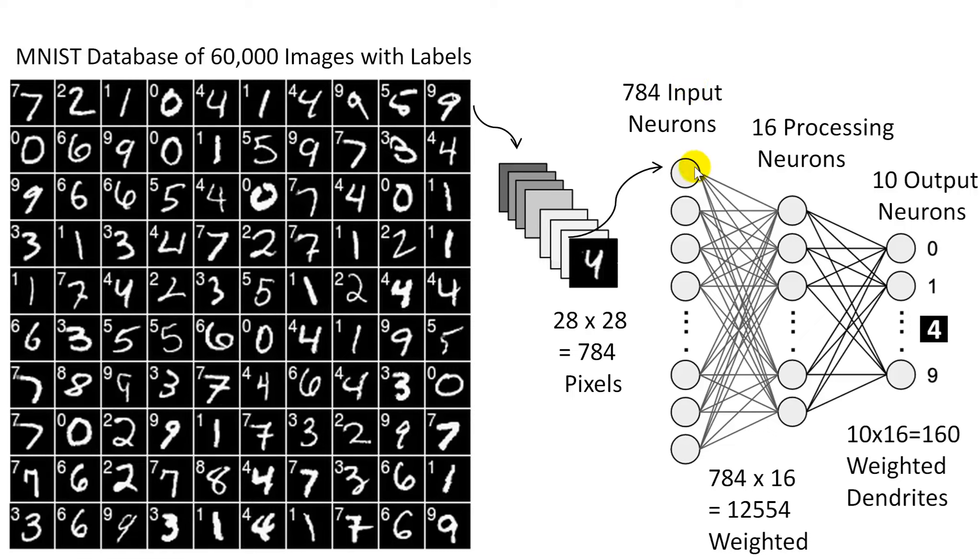Then we have 16 processing neurons here. So even though that's a very bare bones processing architecture, we already now have 12,500 dendrites that we need to connect every pixel to every processing neuron. And then we have 10 output neurons. So that's just 160 connections. And what happens during the training is that the dendrites get weighted.